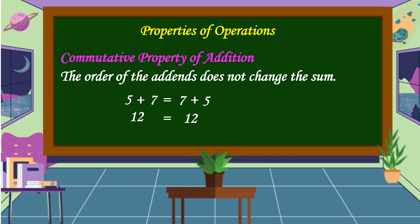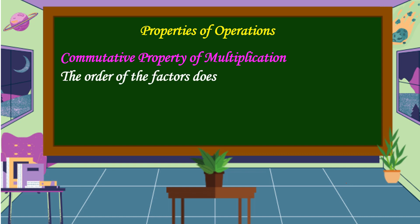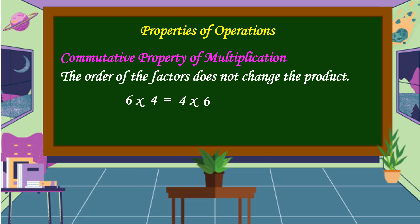Our equation is balanced. The next property is the commutative property of multiplication. This property states that the order of the factors does not change the product. For example, 6 times 4 is equal to 4 times 6. Let's check: 6 times 4 is equal to 24, and 4 times 6 is equal to 24 also. Our equation is balanced.